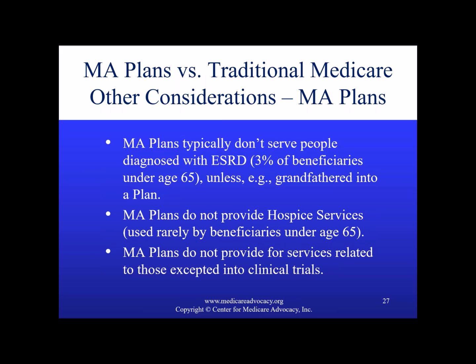A quick note on ESRD: there are many restrictions that apply to folks under 65 when it comes to Medigap rights, and individuals with ESRD under 65 experience even more barriers to purchasing Medigaps. Some states — even those that allow people under 65 to purchase Medigap policies — specifically exclude people with end-stage renal disease, with California being a significant example. Finally, Medicare Advantage plans do not cover hospice services, nor do they cover services related to clinical trials. That is not to say people in Medicare Advantage cannot access hospice or clinical trials — if they do, it changes how those services are paid for and impacts how they access other services within their Medicare Advantage plan unrelated to hospice or clinical trials.